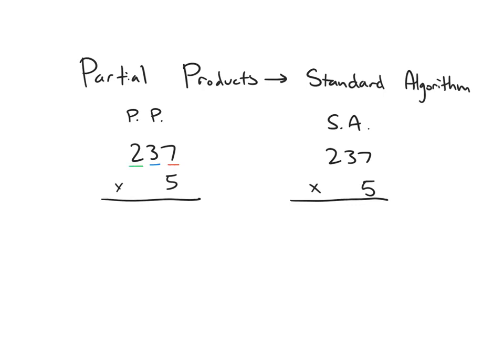With the partial product strategy, I'm going to be multiplying 5 by 7 ones, 5 by 3 tens, and then 5 by 2 hundreds. So 5 times 7 ones is going to be 35, 5 times 3 tens is going to be 150, and 5 times 200 is going to be 1,000. I recorded all the partial products down below, now I'm going to add, and I get my answer of 1,185.